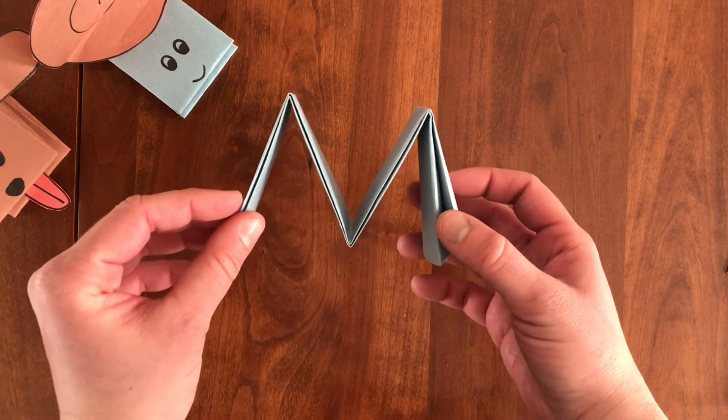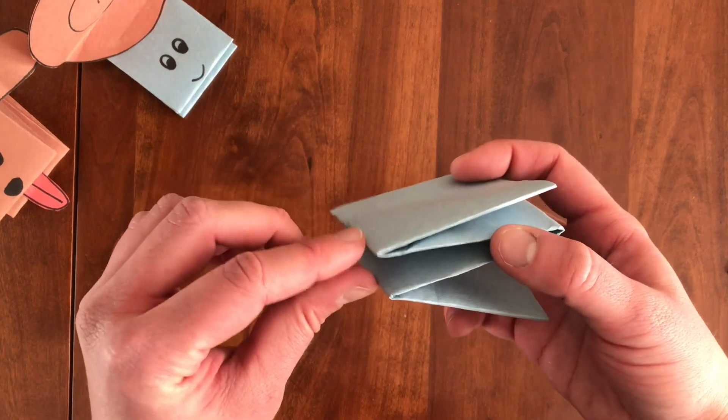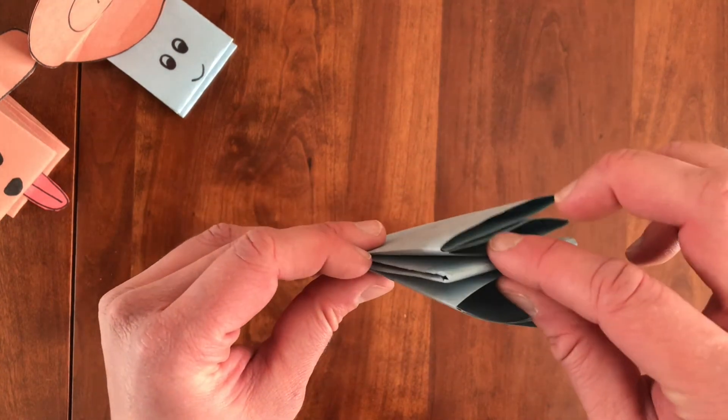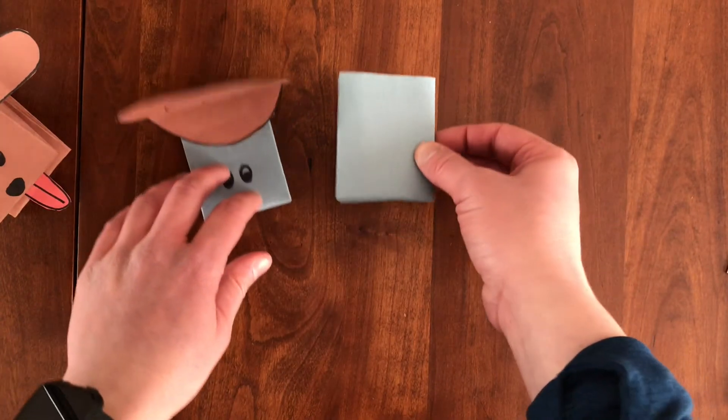All right. So now again, you have that M shape where the closed points are on one side and the open slots are on the other side. So now we've made sort of his body.